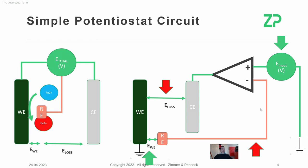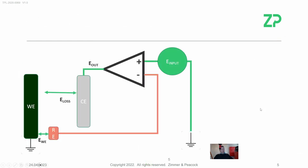Now I'll get a bit more into the math. The working electrode potential is dictated by what I plug in. Here's the equation for an operational amplifier: the output potential equals the amplification factor times the difference of the inputs. The amplification factor A is quite large — around 10⁵ to 10⁶, i.e., 100,000 to a million times.